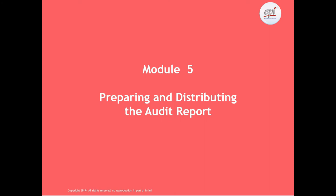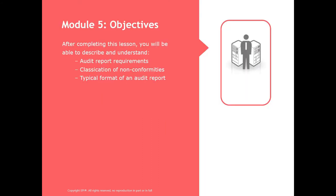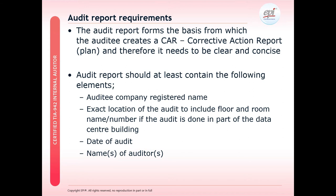Under Module 5, we will look at how to prepare a report and how to distribute the audit report to the appropriate people. The objectives will be looking at how to write an audit report, how to classify nonconformities and findings, and how to format an audit report in an appropriate manner. The audit report forms a basis from which the auditee will create a corrective action report and a corrective action plan, so it needs to be clear and concise.